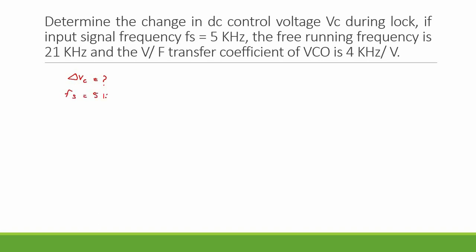The free-running frequency F0 is mentioned as 21 kHz, and the V2F transfer coefficient, that is K suffix V, voltage to frequency transfer coefficient of the VCO, is mentioned by the symbol Kv. It is given as 4 kHz per volt.